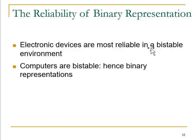Now coming to the reliability of binary representation. Electronic devices are considered most reliable in a bistable environment, and computers are also bistable — that is why we go for binary representation. A bistable environment means you are able to distinguish only two electronic states, for example whether the current flow is present or not, or the direction of flow. Bistable means there are only two possible states: either on or off. Binary representation is most reliable because it makes use of just two states, 0 and 1.